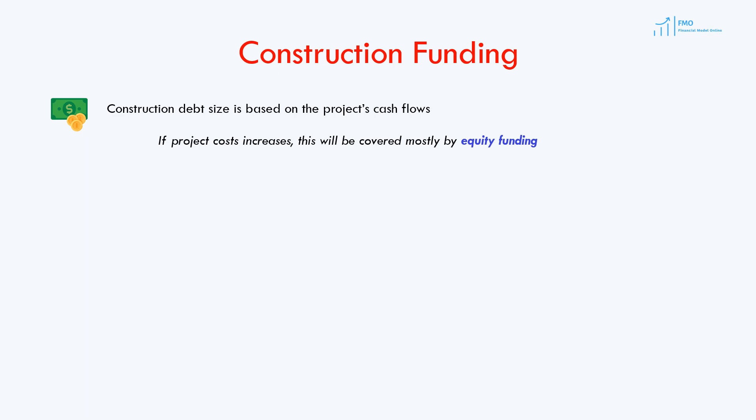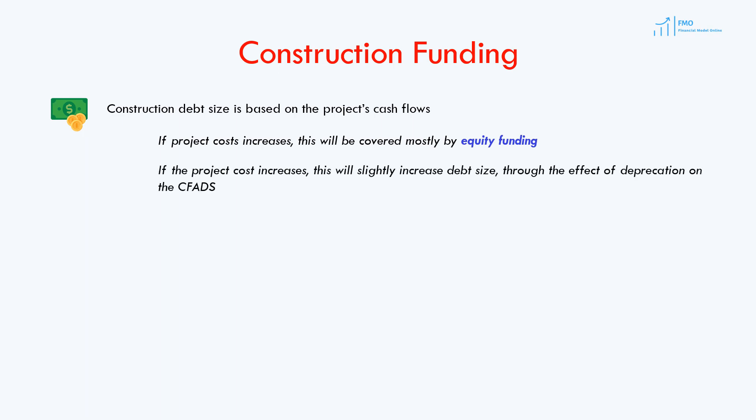However, in the case when the SPV pays taxes, an increase in project costs will increase the fixed assets and depreciation expense, which will decrease the taxes paid. And therefore, the construction loan size will also increase, as reduced taxes means higher CFADs.